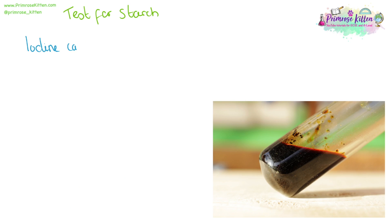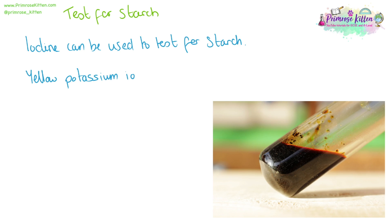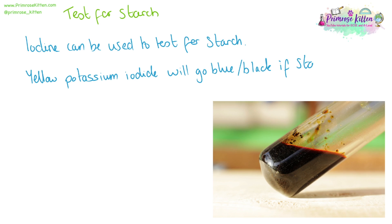Starch is a polysaccharide and we can use iodine to test for the presence of starch. To our sample, we can add droplets of yellow potassium iodide solution, which will turn a blue-black colour if starch is present, indicating a positive result for starch.